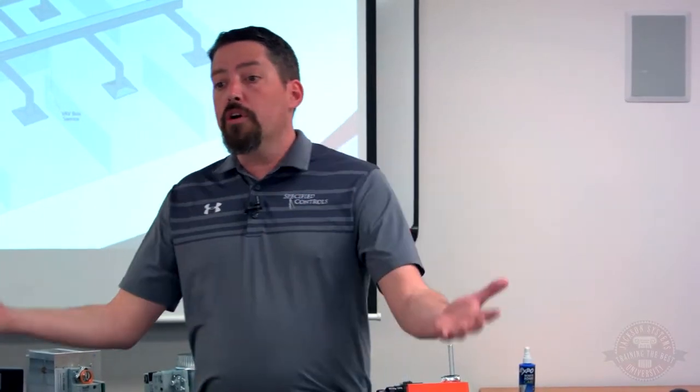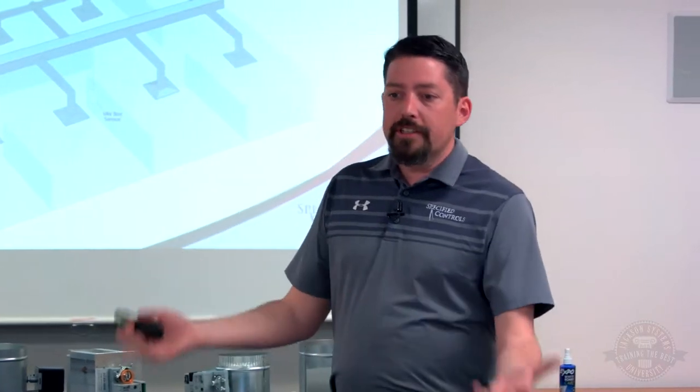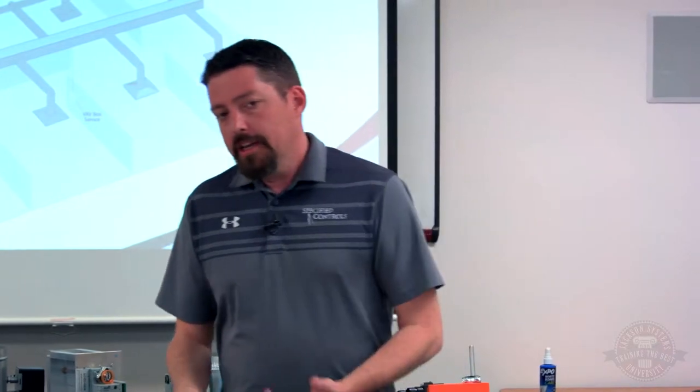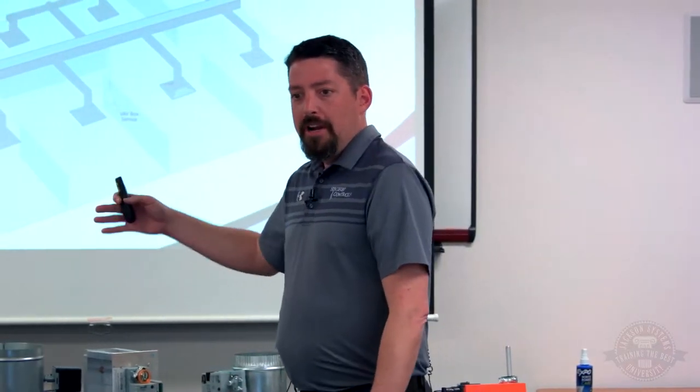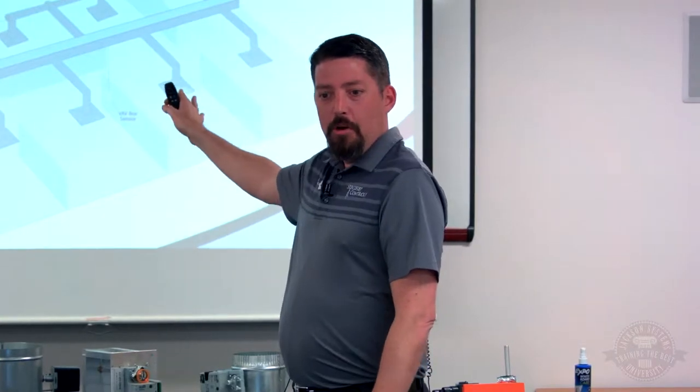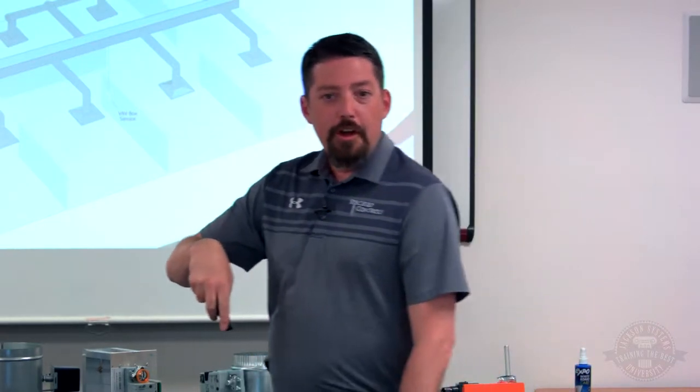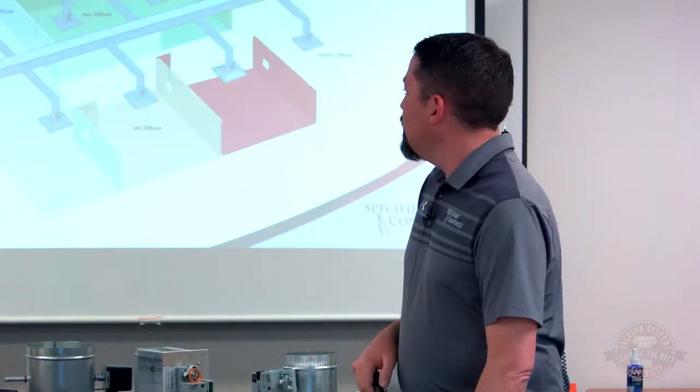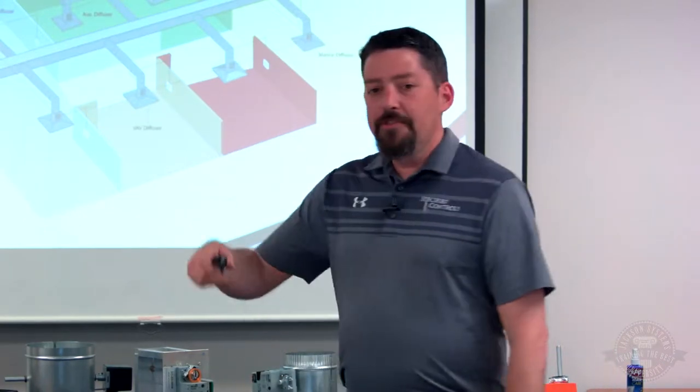In this example, one VAV box is controlling five or six offices — that's somewhat typical. On one floor you might have five or six boxes controlling temperature to a point, but everybody in that zone is not very happy. One or two people might be comfortable, but the others aren't — that happens in our own office, where staff have heaters under their desks because they're not happy.